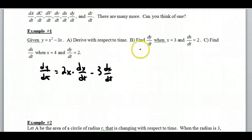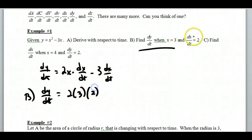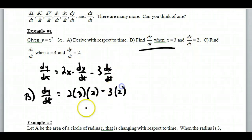We can use this formula to figure things out. It says find dy/dt when x = 3 and dx/dt = 2. This is simply plug and chug. So dy/dt equals 2 times x (which is 3) times dx/dt (which is 2) — this means x is increasing at a rate of 2 — minus 3 times dx/dt, which is also times 2. So dy/dt is 12 minus 6, which equals 6.